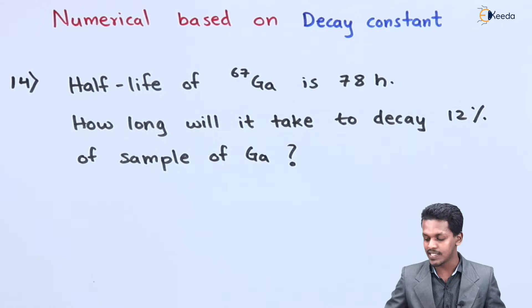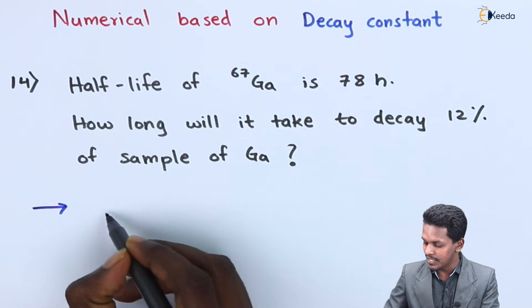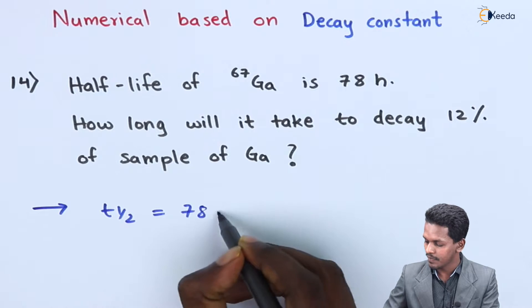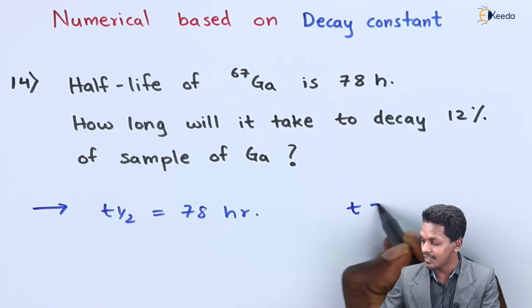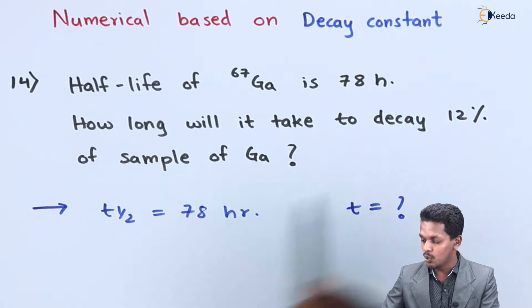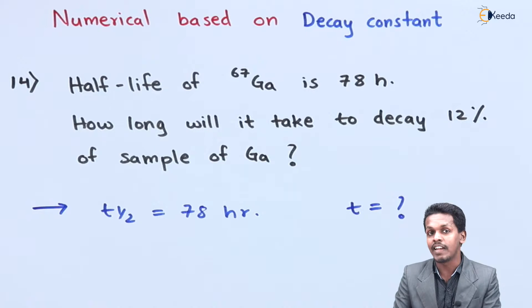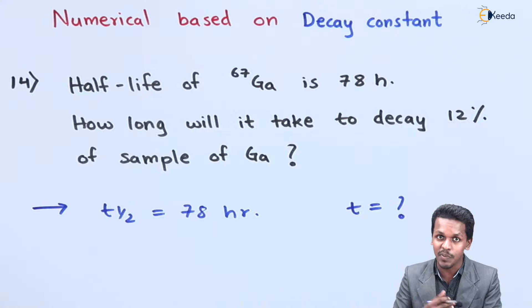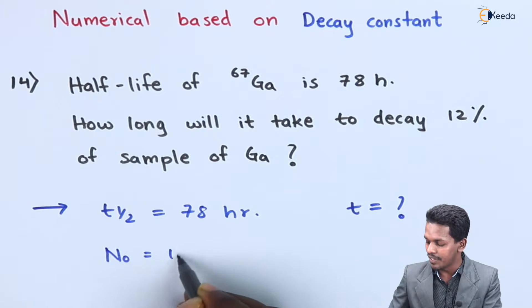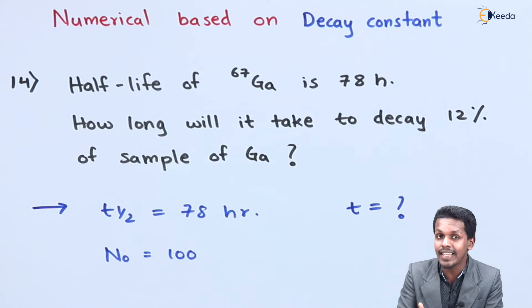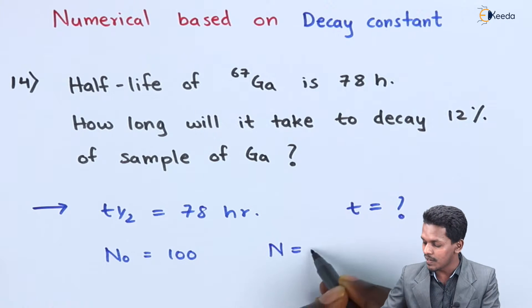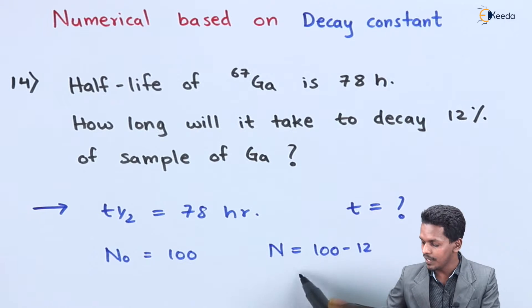The data given is T half = 78 hours. We are asked to find the time if 12% of the sample has decayed. The initial amount N0 = 100%. If 12% decays, the remaining undecayed amount N = 100 - 12 = 88.